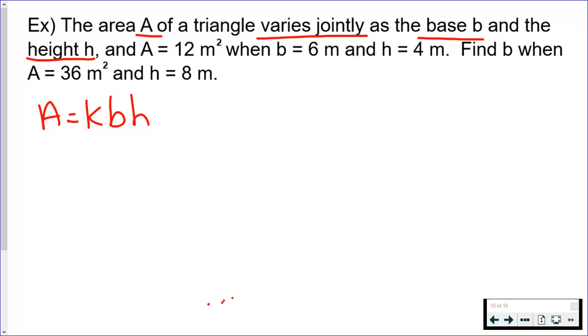So I've got my function already. I'm told that A is 12 when b is 6 and h is 4. You're always going to be given a group of numbers that go together. These three numbers go together: A is 12 when b is 6 and h is 4. After that we're going to find b when A is 36 and h is 8. With this first group of numbers, make sure you keep them together—12, 6, and 4. I'm going to find k. That should always be your first step: find the function, find k.